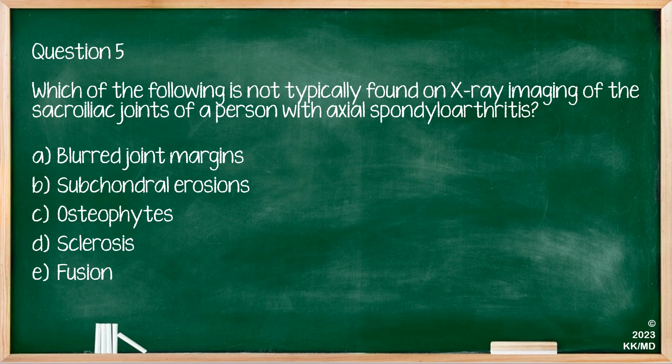Question five: which of the following is not typically found on x-ray imaging of the sacroiliac joints of a person with axial spondyloarthritis? The options are blurred joint margins, subchondral erosions, osteophytes, sclerosis, and fusion. The one that stands out is osteophytes, as that is usually seen in osteoarthritis and not in axial spondyloarthritis.